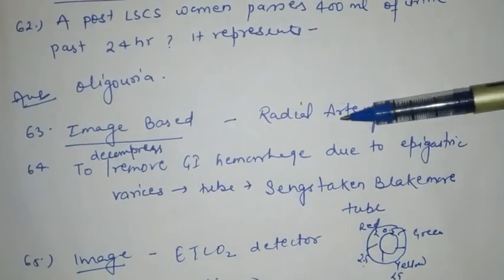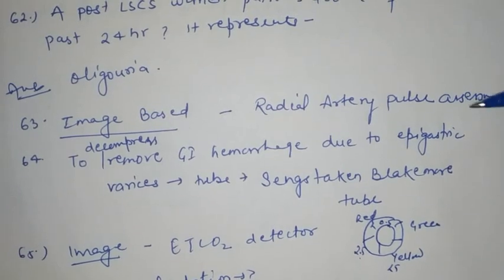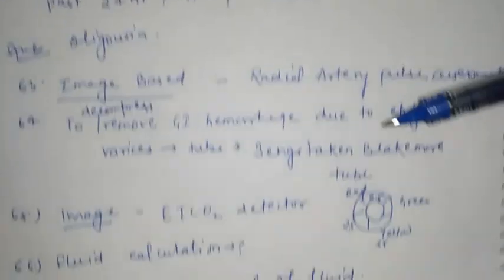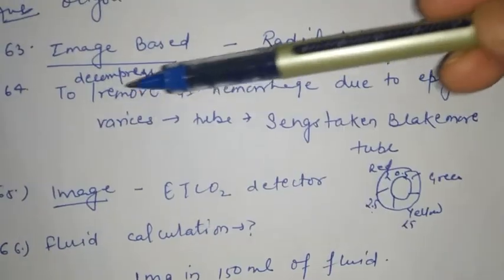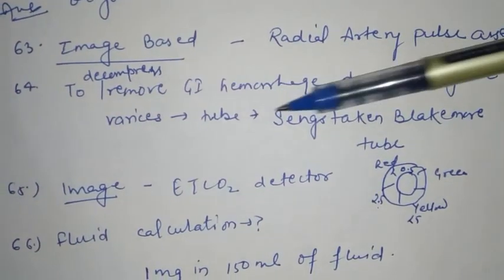A post-LSCS wound patient passes 400 ml of urine after 24 hours — it represents oliguria.